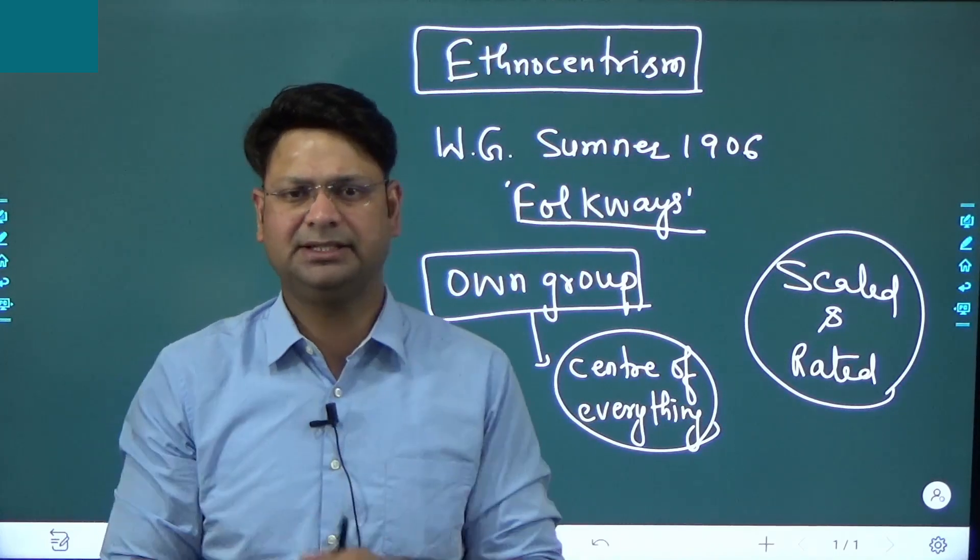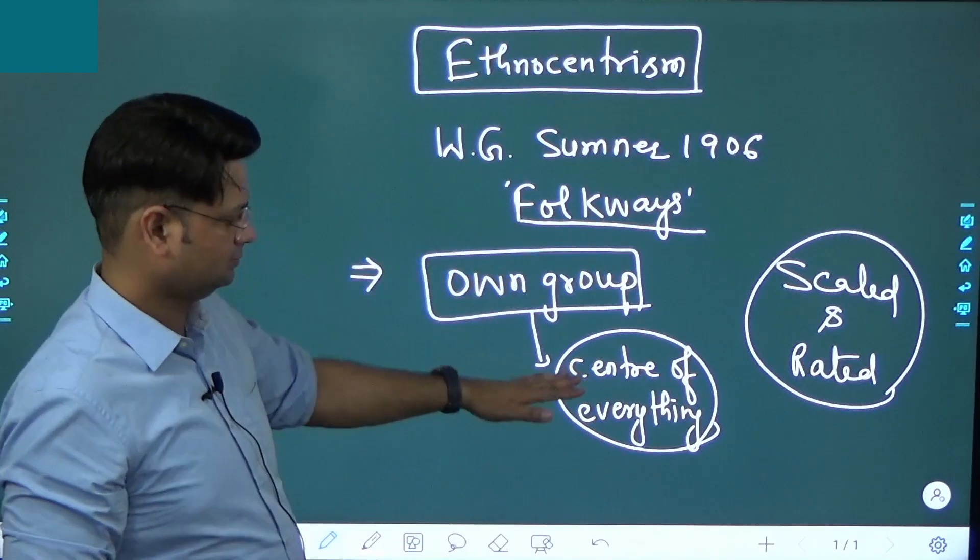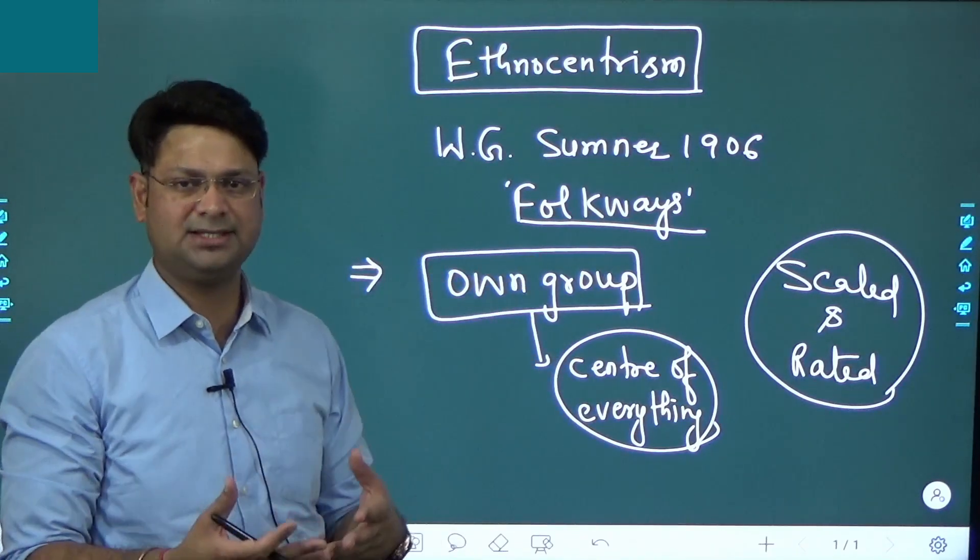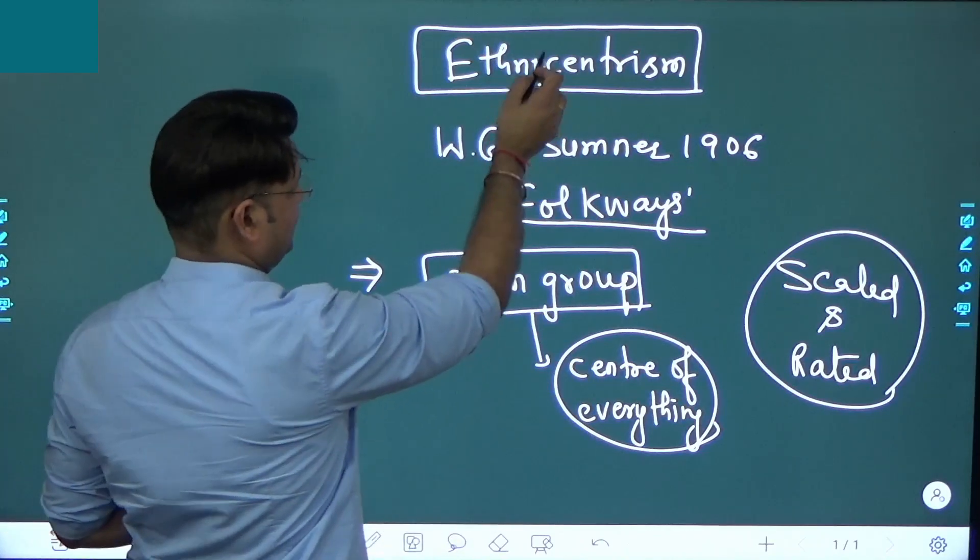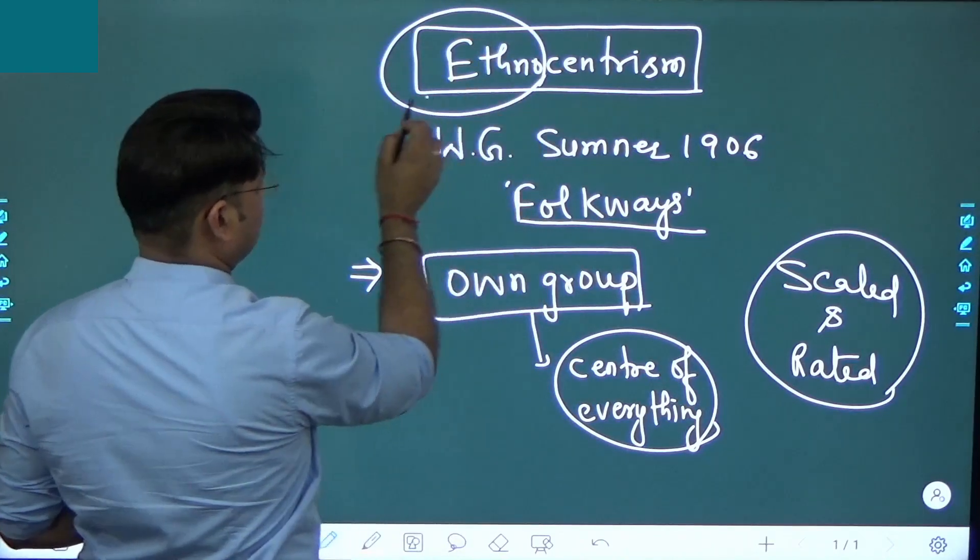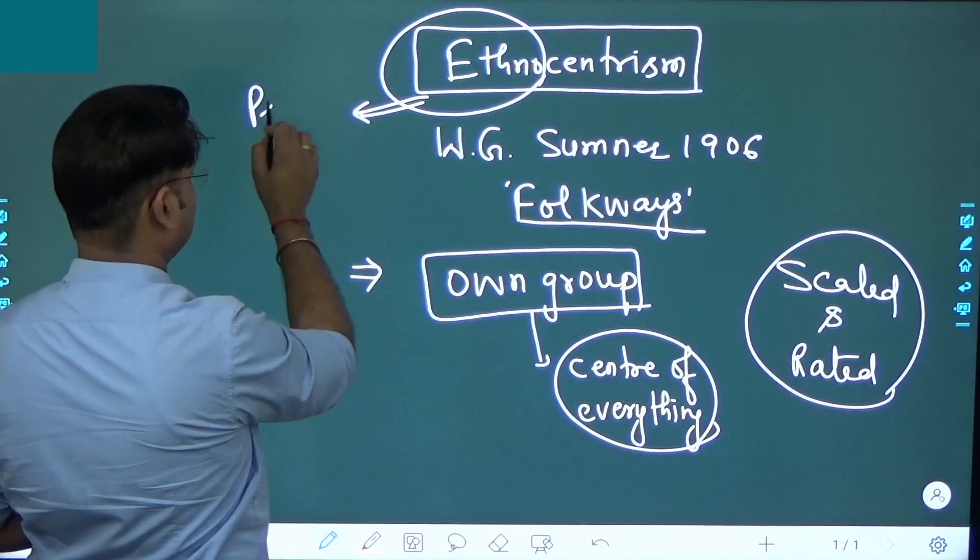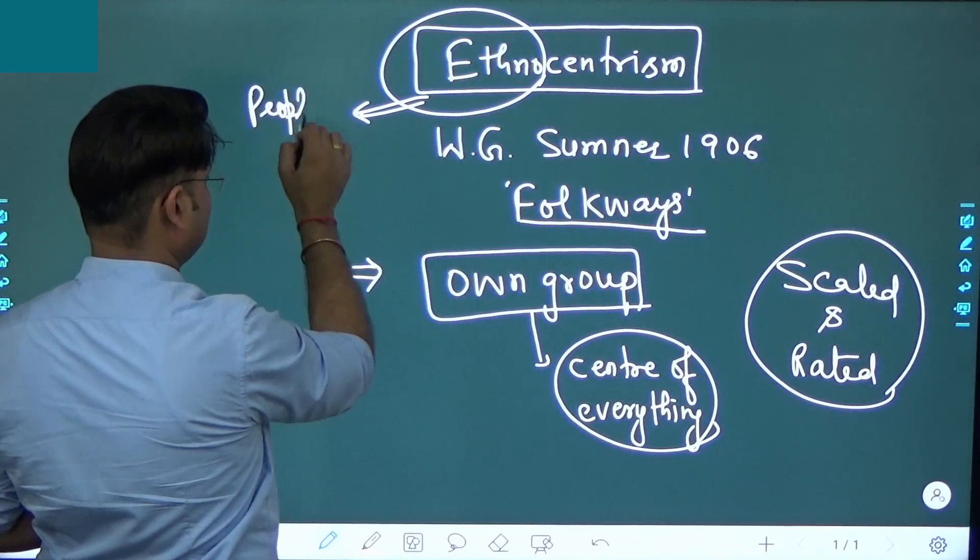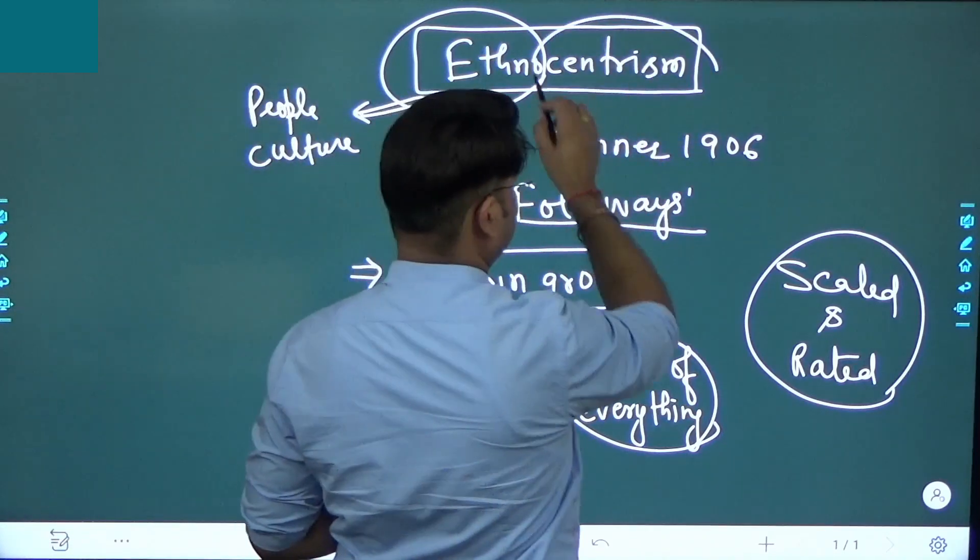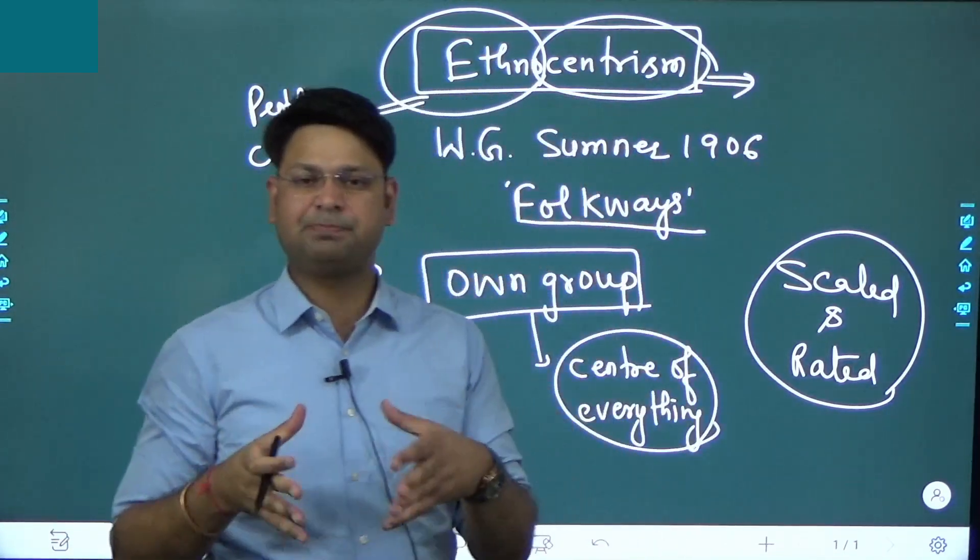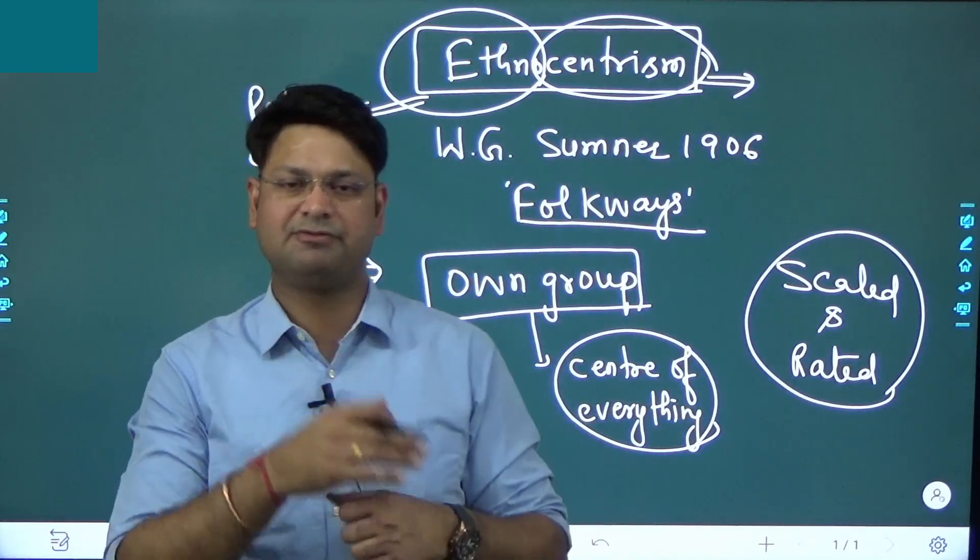Dressing, marriage, anything is judged against that group's perspective. You can break it etymologically: ethnos means people or culture, and centrism means that people and their culture is the center of everything.